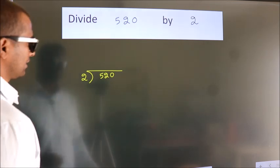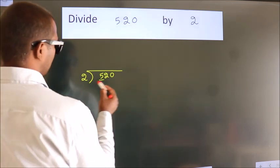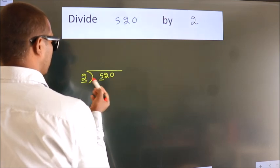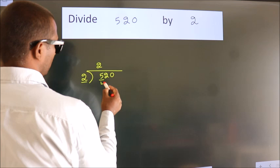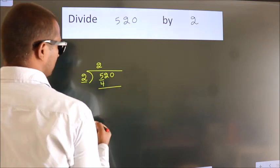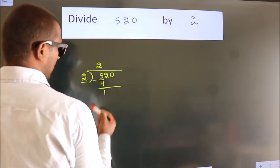Next, here we have 5, here 2. A number close to 5 in 2 table is 2 2's, 4. Now, we should subtract. We get 1.